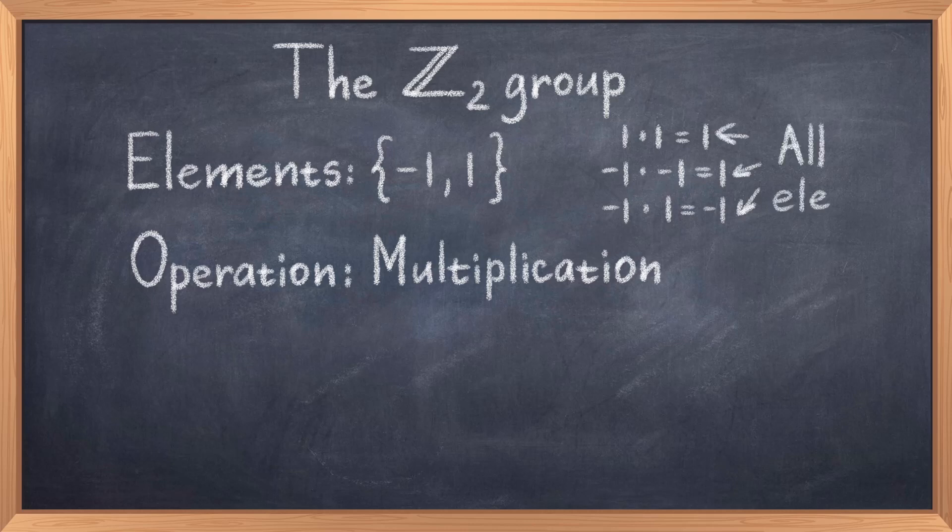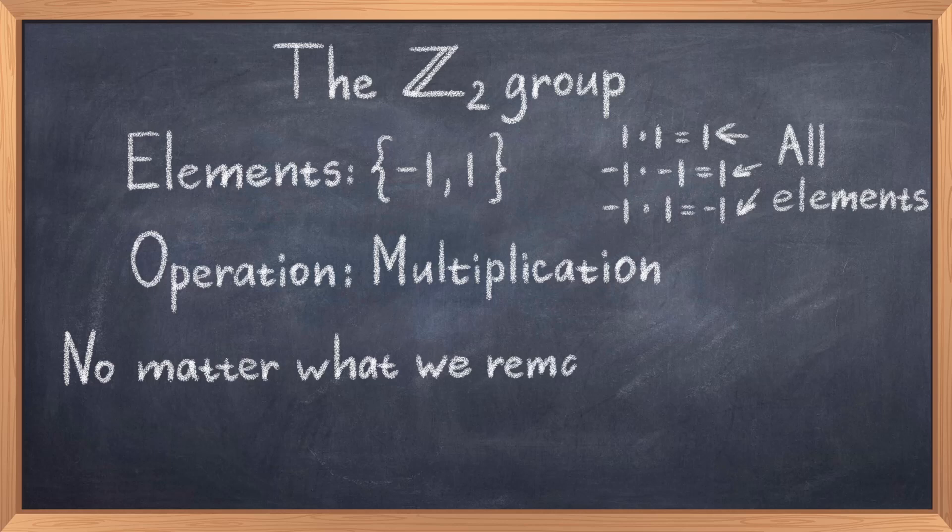Thus we can multiply 1 times 1, that is just 1, or 1 times minus 1, which is minus 1, or minus 1 times minus 1, which is just 1. So no matter what we do, we stay within the elements of the group, and this is a requirement of the group. Just like with the triangle, no matter what we do, we stay within the elements of the group.